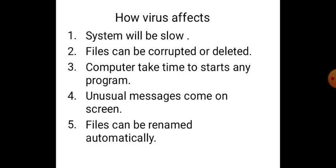Now, how does a virus affect your computer? When a virus comes to your computer, what type of problems do we get? Sometimes our system is working very slow. Some important files are corrupted or deleted. Contents change. Pop-up boxes keep running. The computer takes time to start or close any program. Unwanted messages appear on your screen that you have to close. Files are automatically renaming. These are a few changes we find when a virus affects our computer.